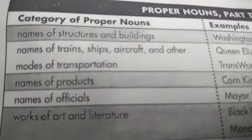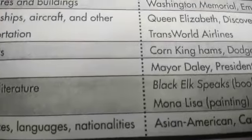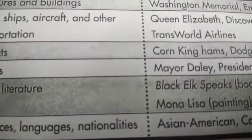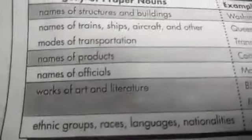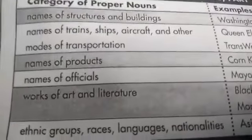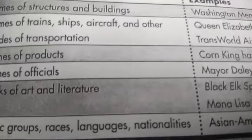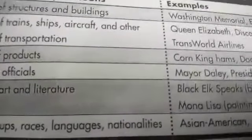Works of art and literature also need to be capitalized. For example, Mona Lisa painting — M and L are capitalized. Similarly, ethnic groups, races, languages, and nationalities have their first letter capitalized, such as Asian American.